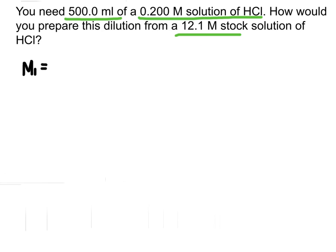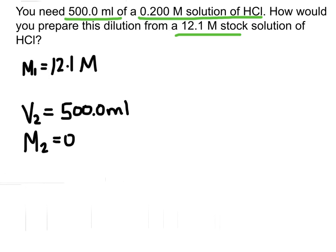We're starting with M1 = 12.1 M. We also know the volume and concentration of the final diluted solution. We want V2, the final volume, to be 500 milliliters, and M2, the final concentration, to be 0.200 M.